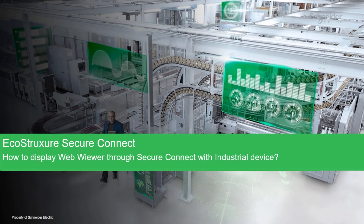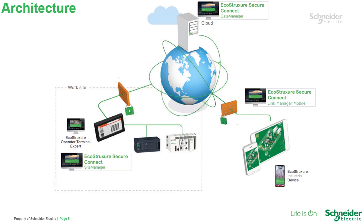This video will show you how to use an industrial device with EcoStruxure Secure Connect. The use case is how to display and control the screen of your HMI using a mobile device such as a smartphone or tablet on different networks.